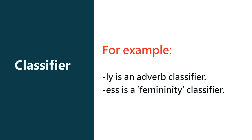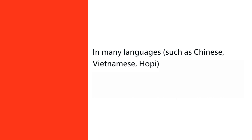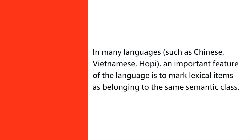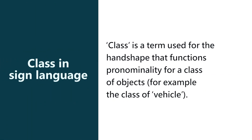Tiger, tigress — that's femininity. In many languages such as Chinese, Vietnamese, and Hopi, one of the important features of the language is to mark lexical items as belonging to the same semantic class. In sign language, 'class' is a term used for a handshape that functions representationally for a class of objects, for example the class of vehicles.